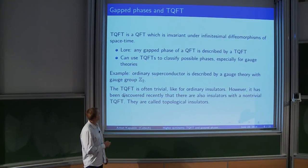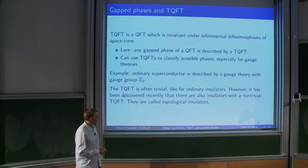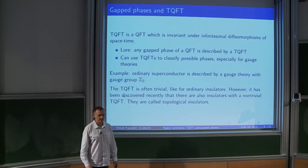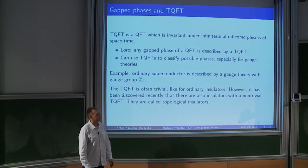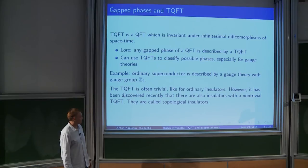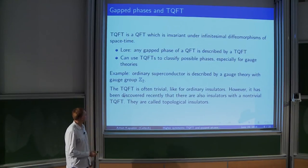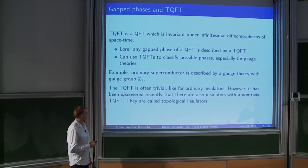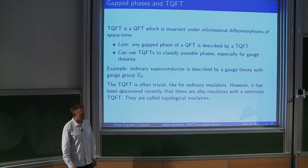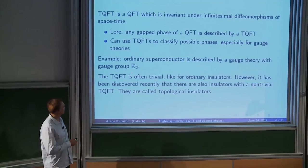One more concrete motivation was to classify possible phases of gauge theories. QCD is an example of a gauge theory, and I'd like to classify phases of gauge theories using topological field theories. There's a well-known example: an ordinary superconductor is described by a topological gauge theory whose gauge group is Z mod 2.